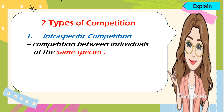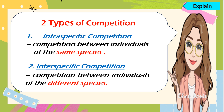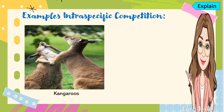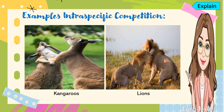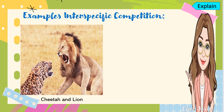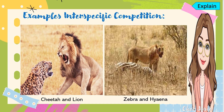Another type of competition is interspecific competition, where they compete with different species. An example of intraspecific competition is between kangaroos or between lions — they compete because of food, shelter, or space. For interspecific competition, we have examples such as cheetah and lion, and also zebra and hyena, competing with each other in terms of food or space.